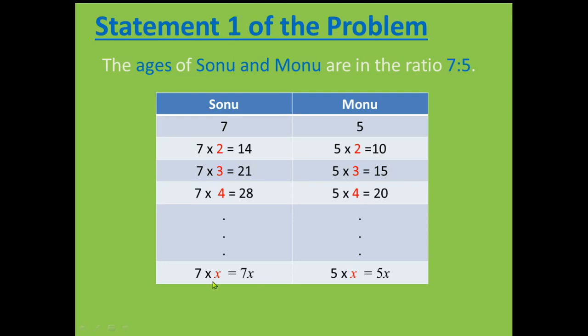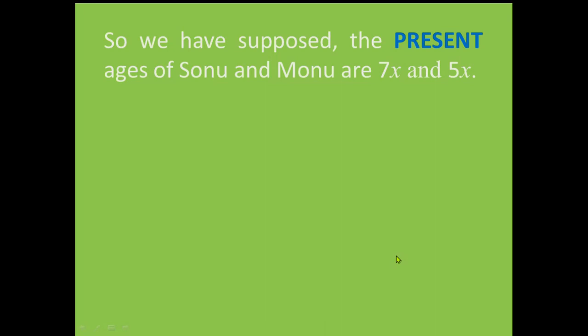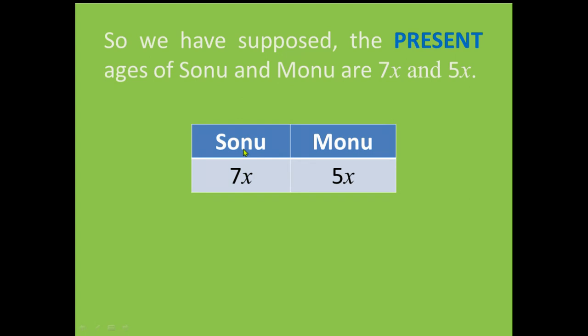So we will suppose the factor as X. Let X be the factor with which we will multiply this ratio. So 7 times X, if 7X is the age of Sonu, then 5 times X, 5X will be Monu's age. So we have supposed that the present ages of Sonu and Monu are 7X and 5X. We write this in the table below: 7X is the age of Sonu, 5X is the age of Monu.